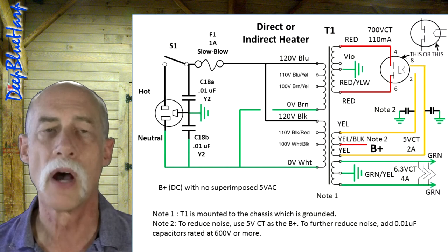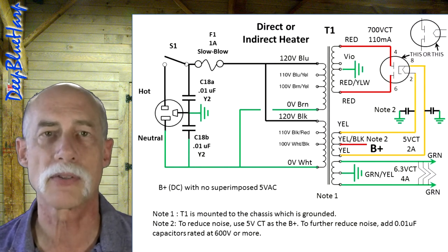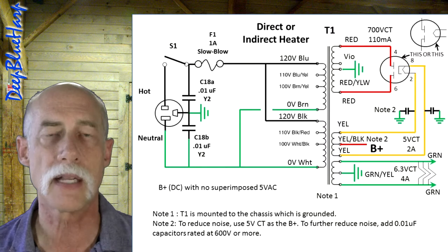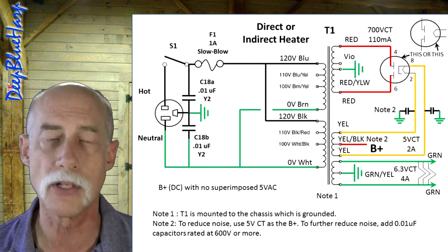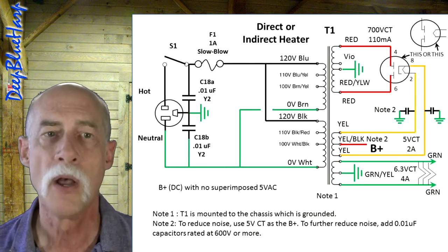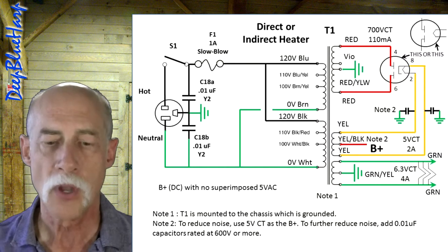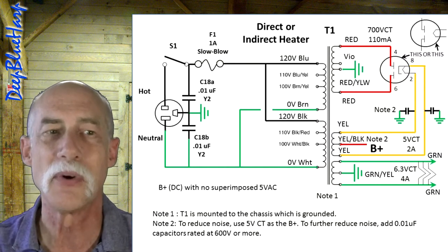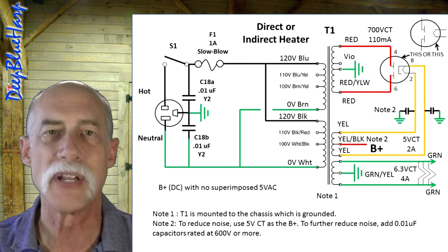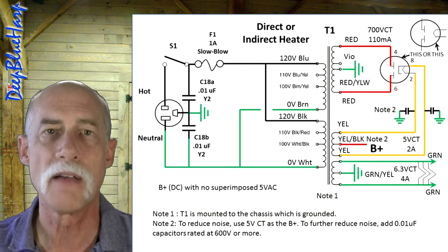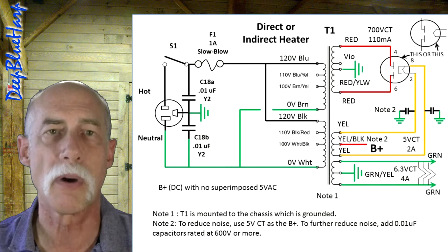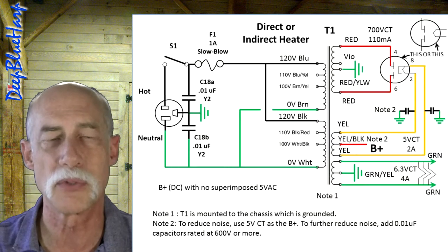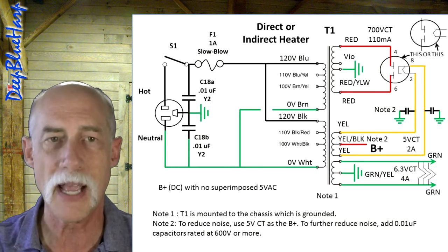If you were not to pull your B+ off the pin 8, off an indirect heated vacuum tube, it's fine. You can pull it off the center tap. Why would you do that? Well, that is to minimize or negate the 5V that is also part of the 350 volts, which is on the pin 8.